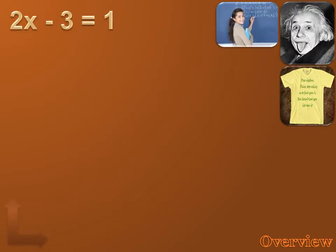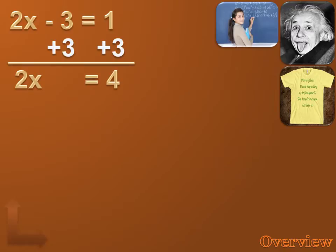If you watched our last lesson on solving multi-step equations, hopefully you'll know how to solve this equation: 2x minus 3 equals 1. First, I'd need to undo that subtract 3, so I'd add 3 to both sides of the equation. Then I'd want to undo that multiply by 2, so I'd divide both sides by 2. And when I got done, I'd have x equals 2. Pretty simple — just a two-step equation. I had two steps to perform, and I solved the equation.